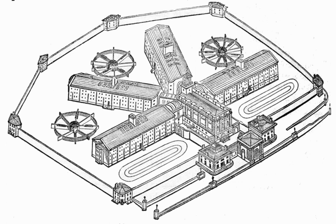Rational choice is based on numerous assumptions, one of which is individualism. The second is that individuals have to maximize their goals, and the third is that individuals are self-interested. Offenders are thinking about themselves and how to advance their personal goals.